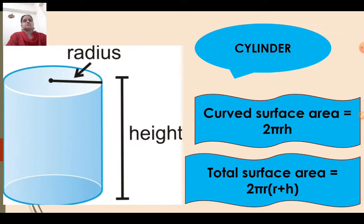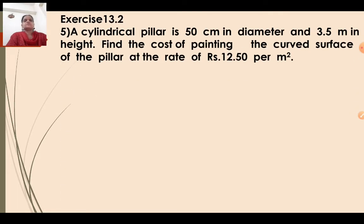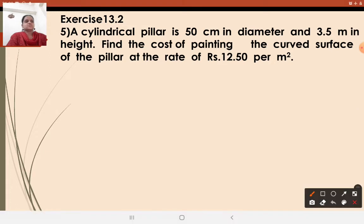So these both formulas you should be clear with, and then solve the sums. Let us continue with exercise 13.2, question number 5. A cylindrical pillar is 50 cm in diameter and 3.5 meter in height. Find the cost of painting the curved surface of the pillar at a rate of Rs. 12.50 per meter square. Always read the question carefully and find out the given part and what you want to find.